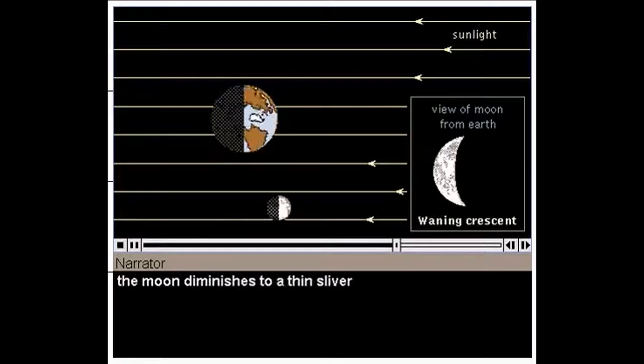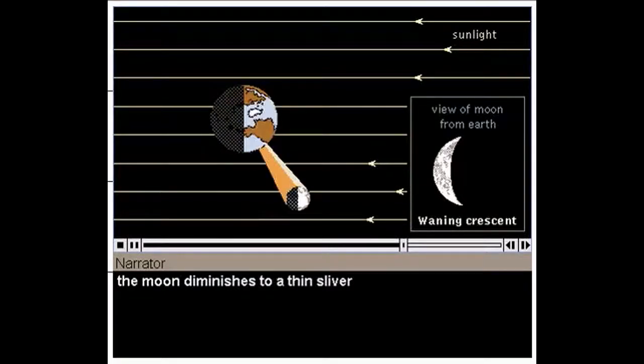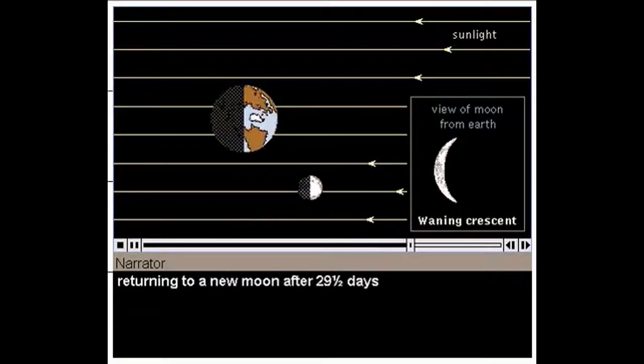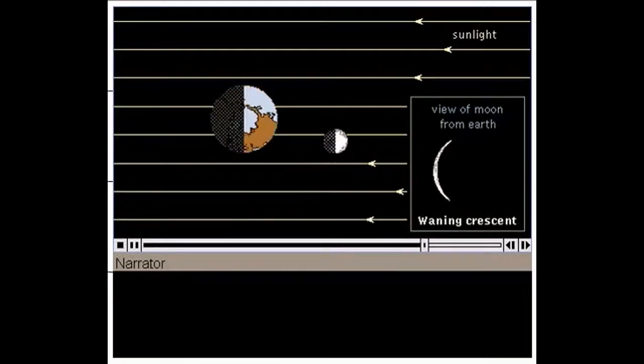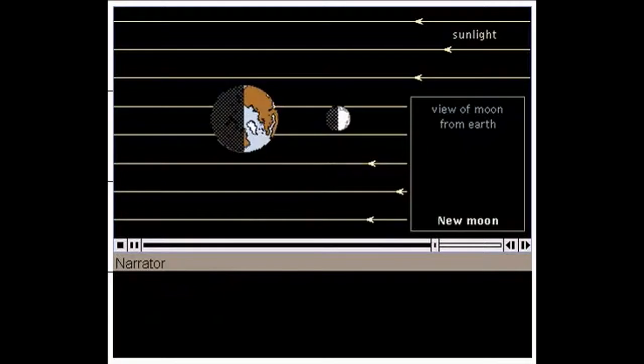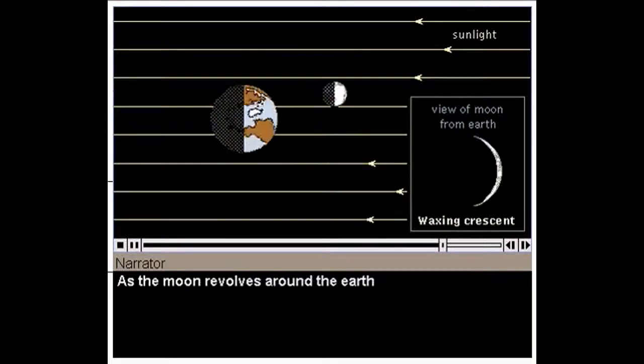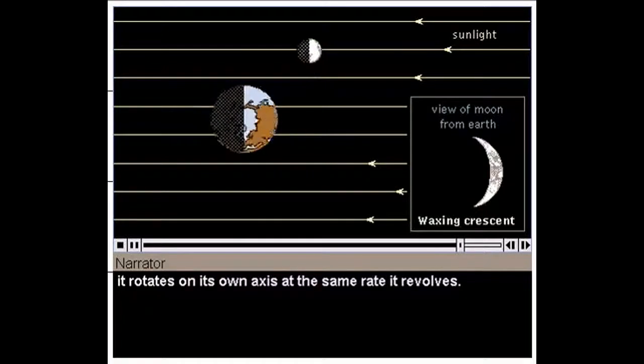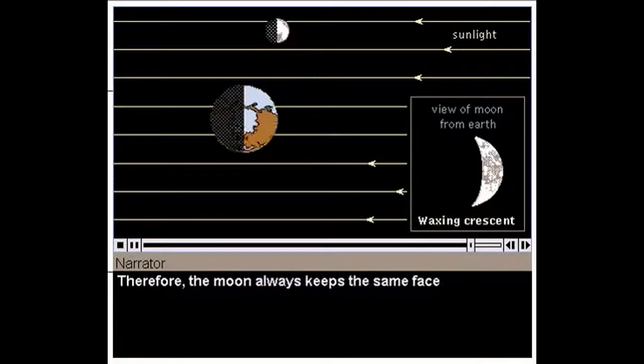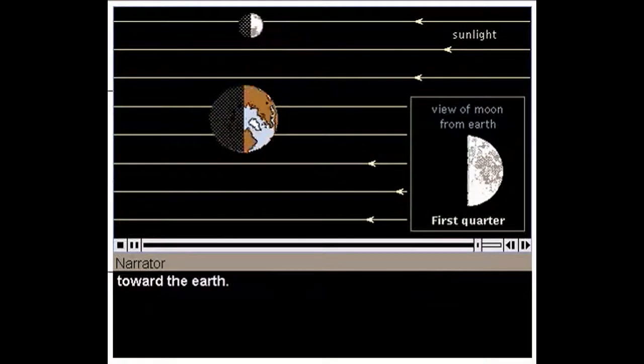As a waning crescent, the moon diminishes to a thin sliver, returning to a new moon after twenty-nine and a half days, or one lunar month. As the moon revolves around the earth, it rotates on its own axis at the same rate it revolves. Therefore, the moon always keeps the same face toward the earth.